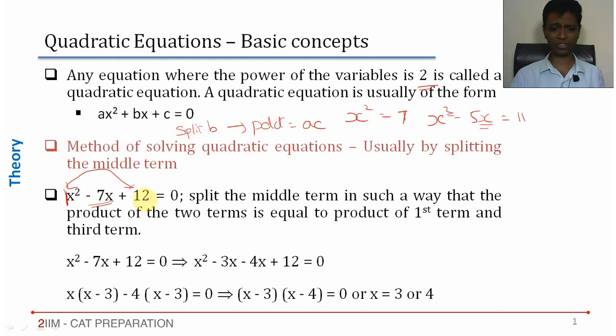Break -7 into two parts such that the two parts multiplied together give 12. That is -3 into -4: x² - 3x - 4x + 12 = 0.